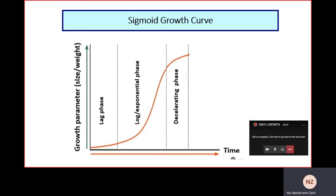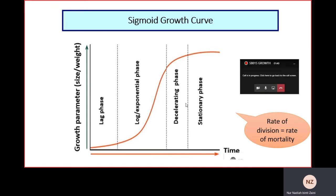The last phase is the stationary phase where constant growth is reached. The cells divide to replace dead cells. The rate of cell division is equal to the rate of mortality and lastly the net growth is zero.